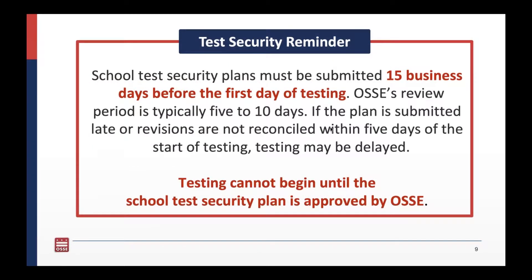As a test security reminder, school test security plans must be submitted 15 business days before the first day of testing. OSCE's review period is typically 5 to 10 days. If the plan is submitted late or revisions are not reconciled within 5 days, the start of testing may be delayed. OSCE is prepared to work with schools and LEAs to get plans approved, but testing cannot begin until the school test security plan is approved by OSCE.